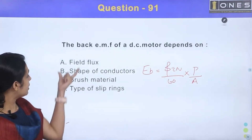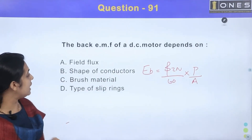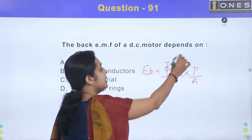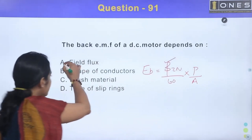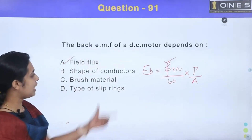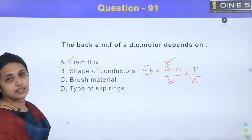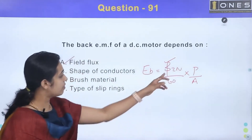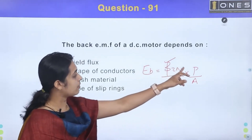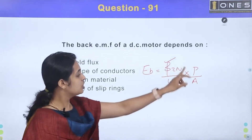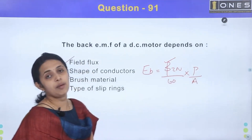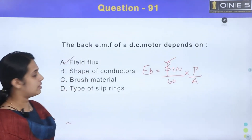The first option is field flux. Back EMF will depend on the shape of a conductor — what is the shape of a conductor? Then flux, number of conductors, speed, number of faults, and number of parallels.